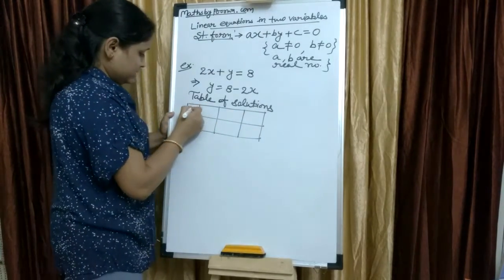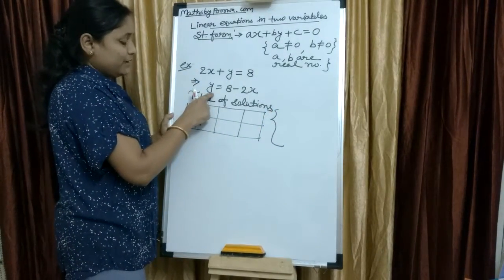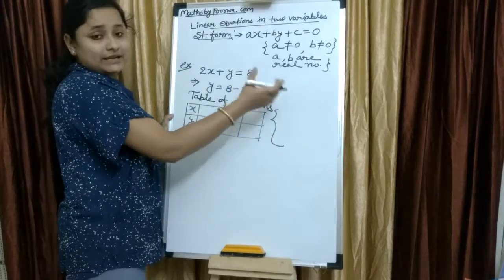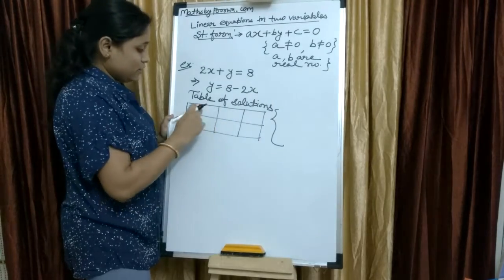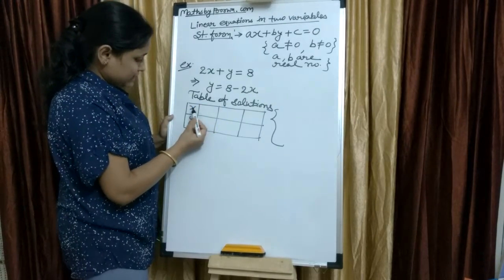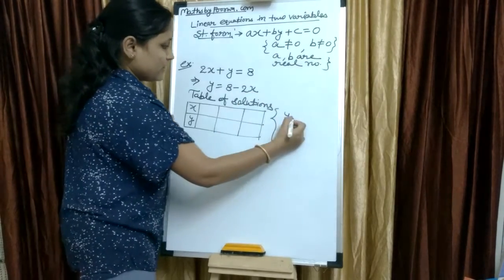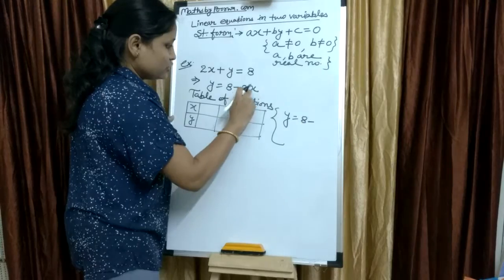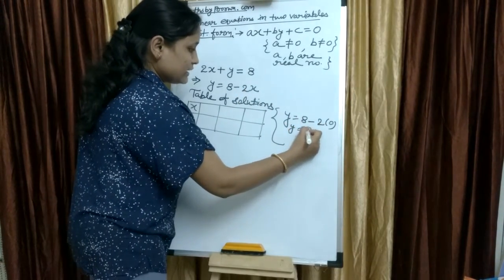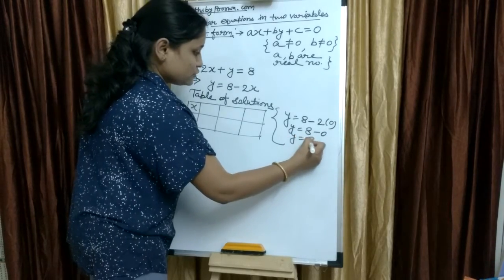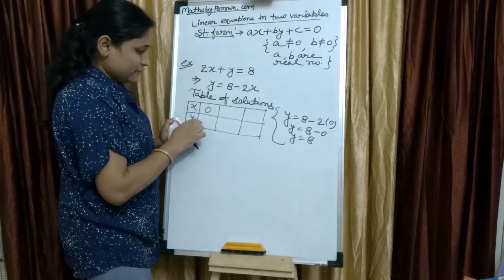Here x, here y. Now, you have to find y by putting x values and finding the corresponding y values. For example, when you put x equals to 0, from this equation, y equals to 8 minus 2 into 0. So, y equals to 8 minus 0 means y equals to 8. If you put x equals to 0, then y will be 8.